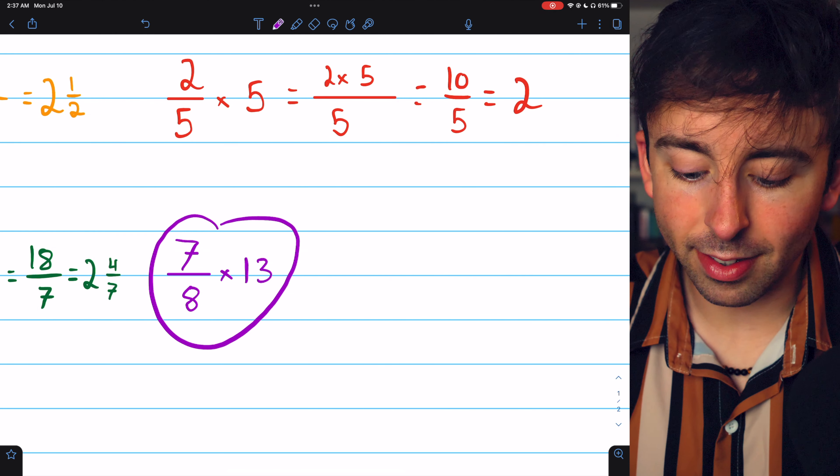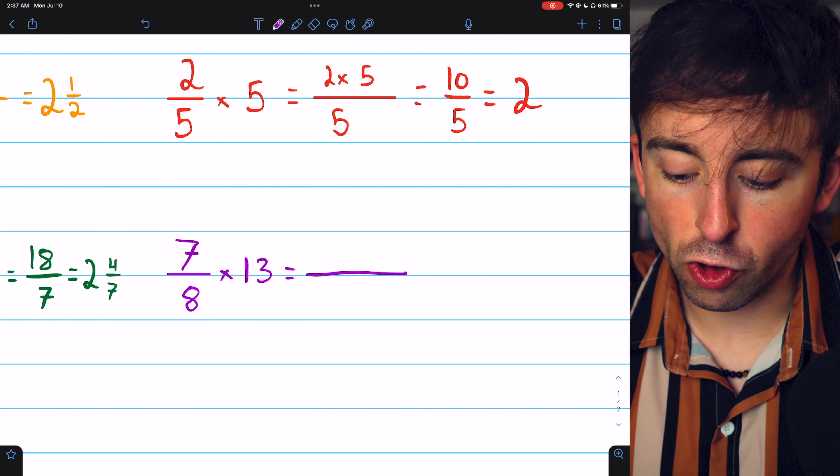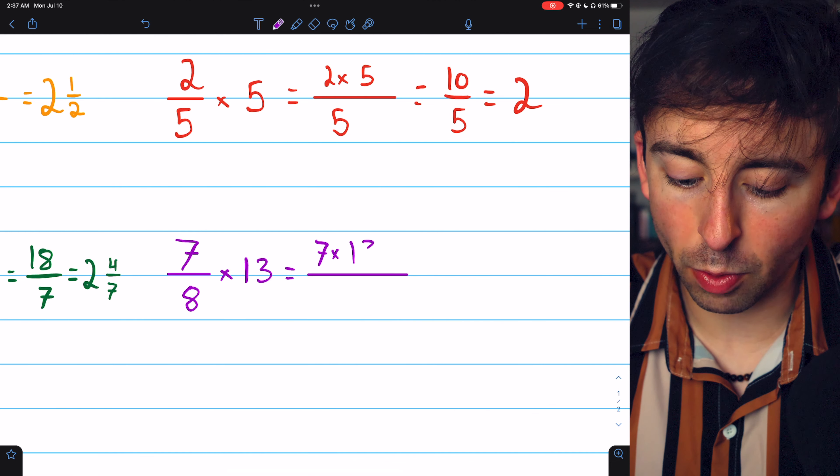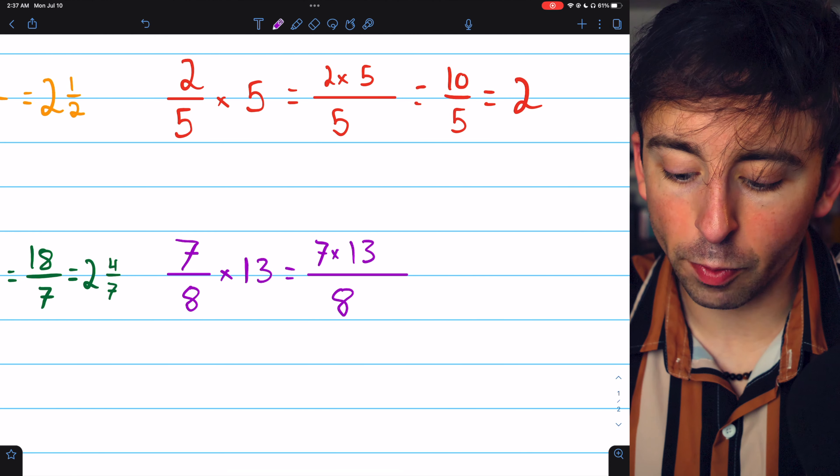Finally, 7 eighths times 13. Again, just multiply the numerator by the whole number. So 7 times 13 over 8.